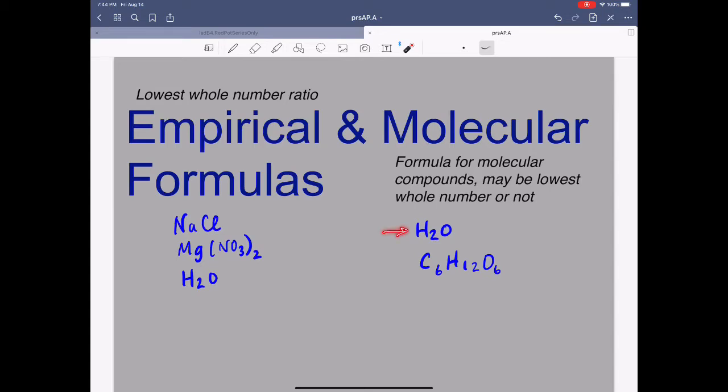H2O, for instance, is actually the molecule for water. Even though it's the lowest whole number ratio, this is the actual chemical formula. Sugar, on the other hand, glucose C6H12O6, can be reduced. This is the actual molecule of glucose, but the empirical formula of glucose would be CH2O.